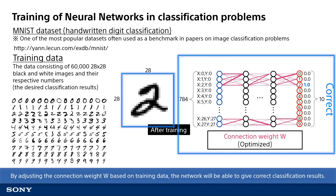As training advances, you can see optimization taking place so that only the correct neurons output the value 1.0 for a given input image, while other neurons output 0. The connection weights start as random numbers but are adjusted using training data so that only the correct neurons corresponding to the input data output the value. This is what it means to train the neural network in an image classification problem. Once training is done, no training data is needed. By saving the architecture of the neural network and the connection weight values, we can enable the neural network to correctly identify and classify images not seen during training.